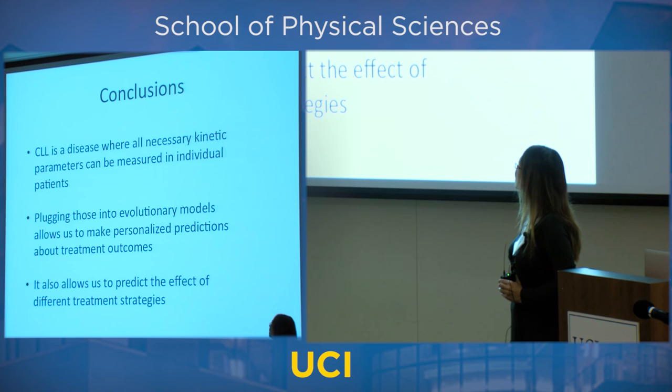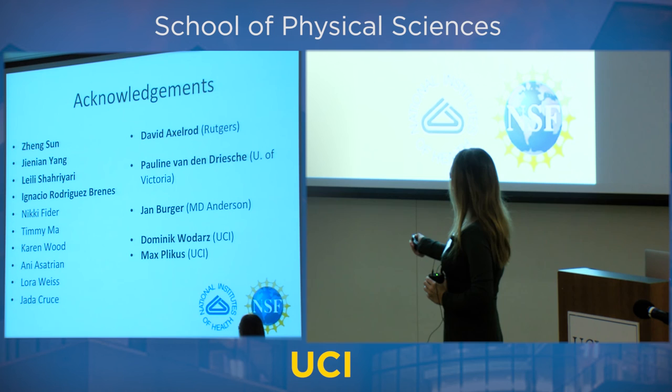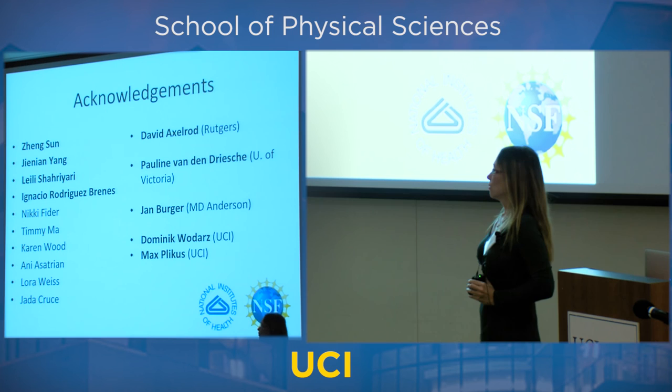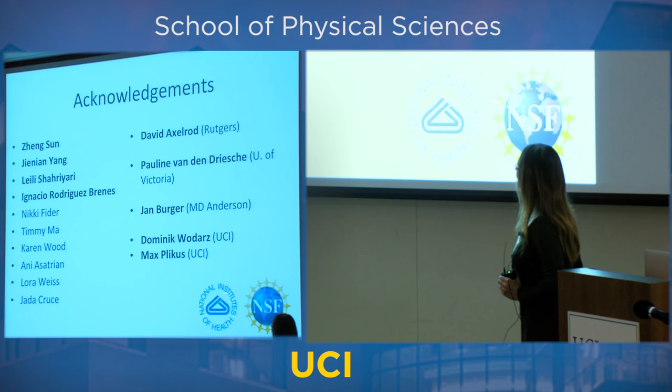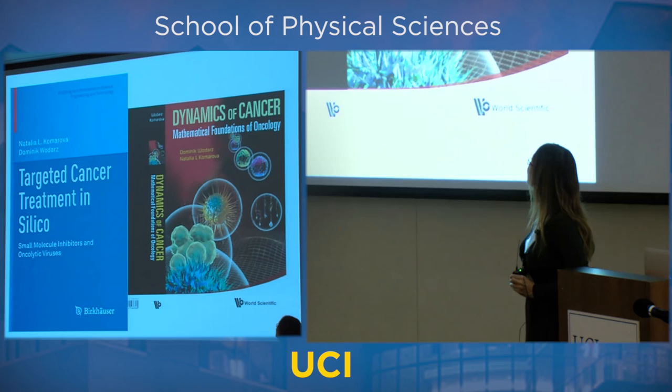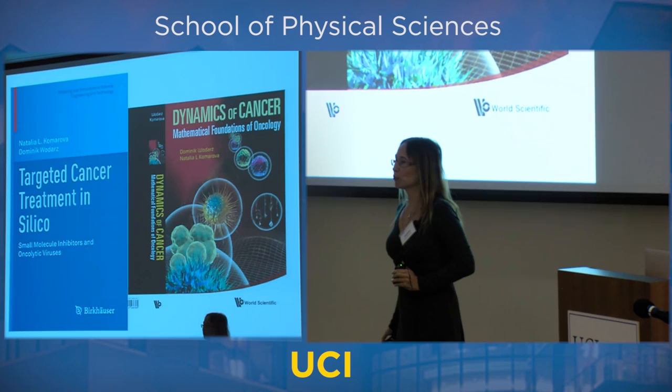To conclude: CLL is a disease where all necessary kinetic parameters can be measured individually in patients. We can plug them into the computer, predict what's going to happen, and work out the best strategy for each individual patient. I would like to thank my group, my students and postdocs, my collaborators from UCI and other universities, and partial support from NSF and NIH. These are a couple of books published on mathematical modeling of cancer. Thank you very much.